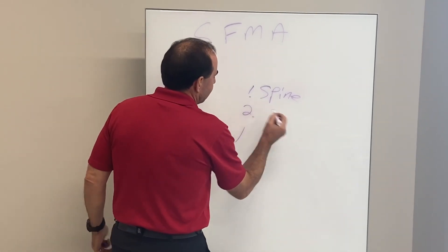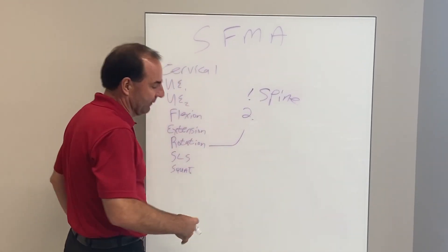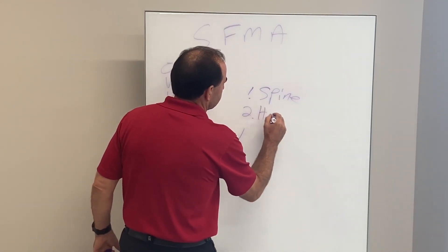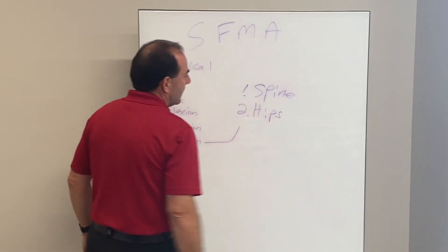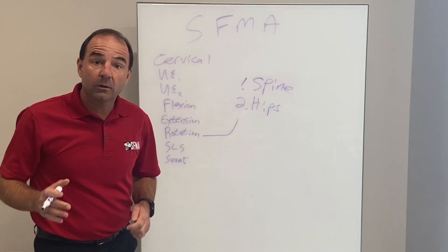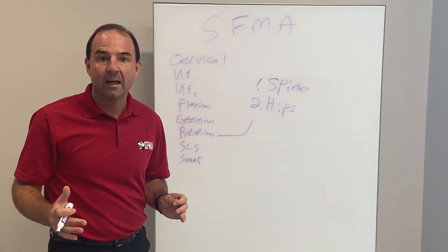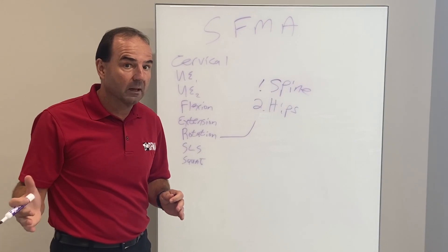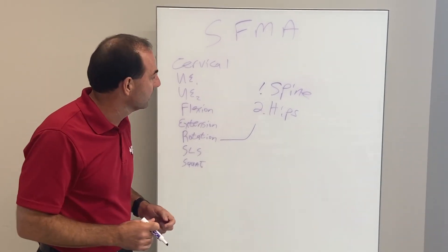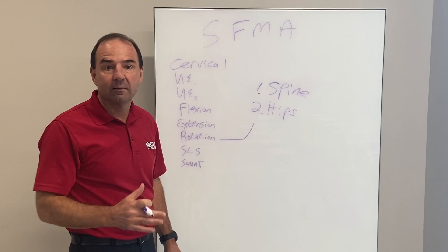The next thing is going to be the hips — obviously you're going to twist through your hips and the pelvis. We've got to look at both hip internal rotation ability and hip external rotation ability. We'll show you how to assess that actively and passively if needed.